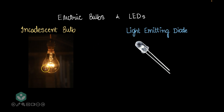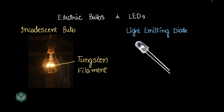If we look at an incandescent bulb, especially when it's turned off, you'll notice that there's a tiny coiled up wire here that is producing heat and light. That wire is called the filament of the bulb — it's made of tungsten, so it's called the tungsten filament.